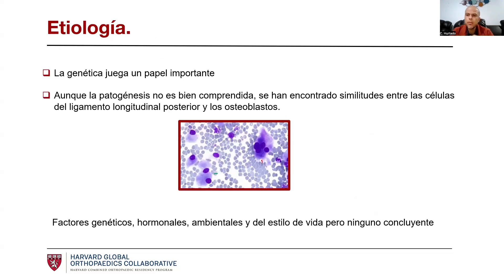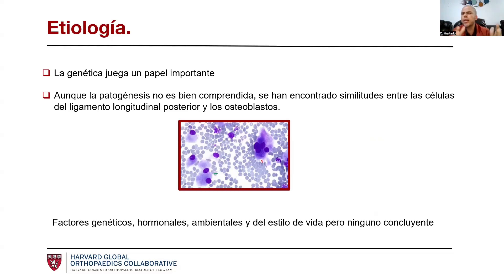En cuanto a la etiología, no se tiene clara, pero sí sabemos que la genética juega un papel importante. No hay una patogénesis bien comprendida, pero sí hay similitudes entre lo encontrado en estas osificaciones y los osteoblastos. Se han estudiado factores locales en animales: aquellos que tienen herniaciones de núcleos pulposos tienden a desarrollar cierta osificación de esta estructura.